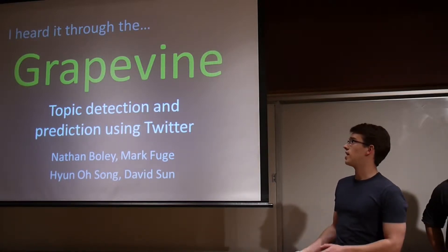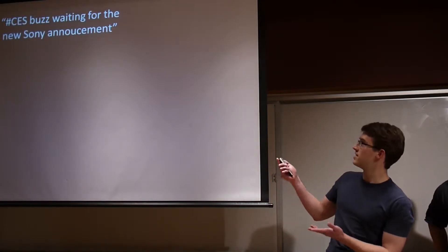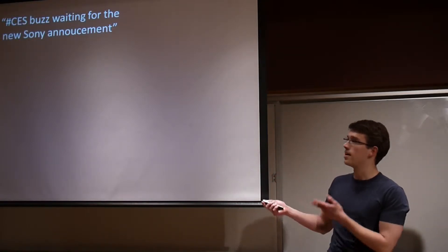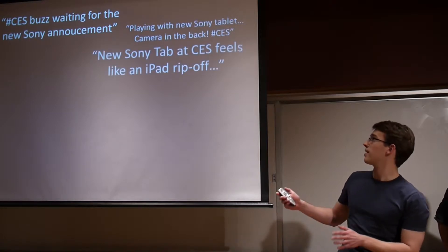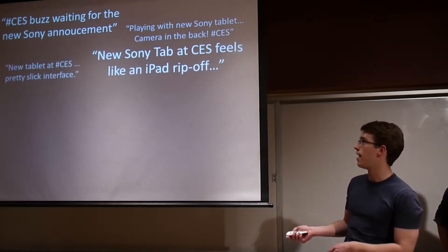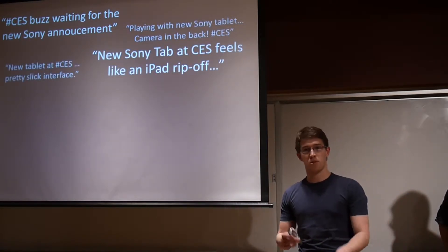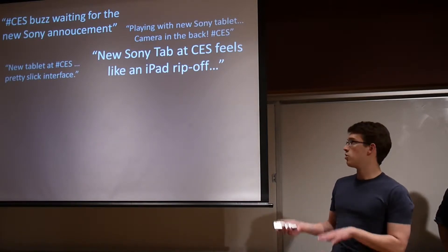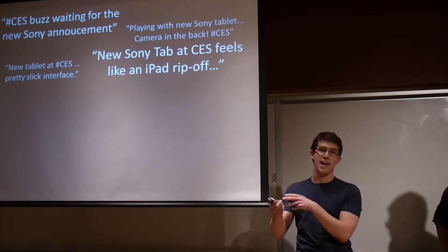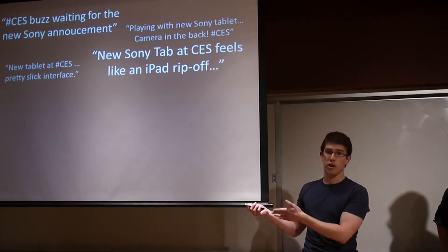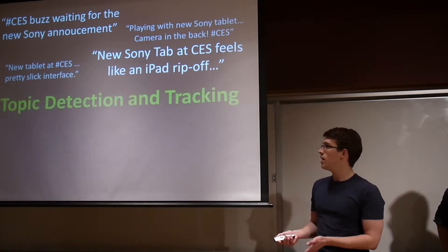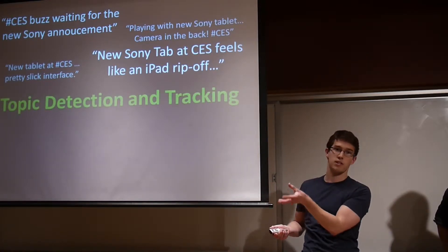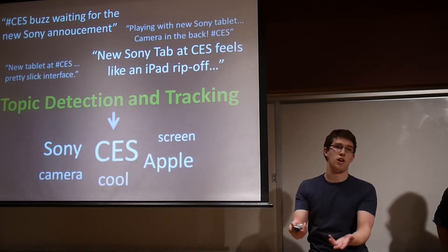To give you guys an overview of what this is: if you're looking at something like Twitter and you start pulling up Twitter and seeing what comes through, you might see stuff like this — something about Sony, something about cameras with Sony, some tablet. This might be if you sampled Twitter right around the time that CES was happening. The goal of our project is, given past information about what people were talking about, can you detect the topics they're referring to and then predict future topics?